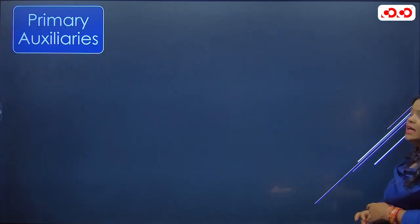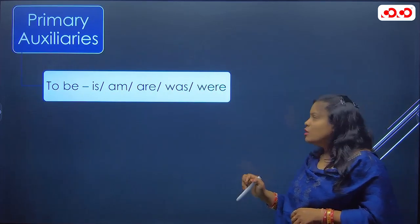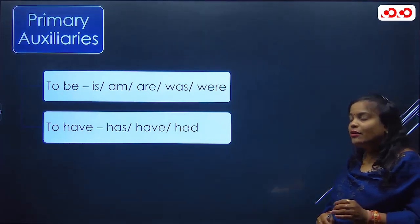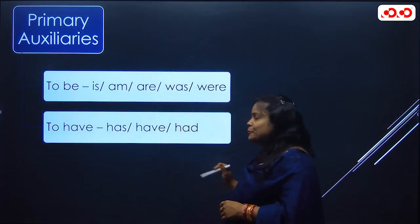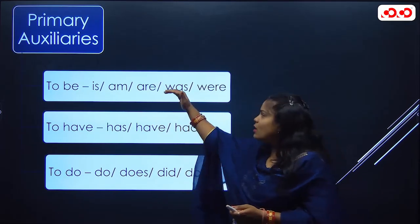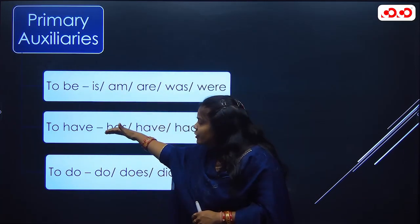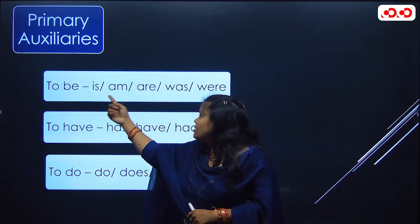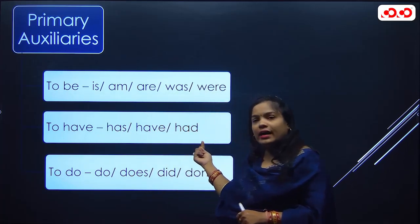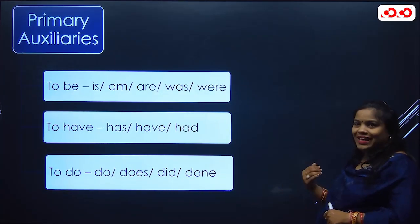Now let's talk about helping verbs. Primary auxiliaries exist in three different forms: the 'to be' form — is, am, are, was, were; the 'to have' form — has, have, had; and the 'to do' form — do, does, did, done. These are all primary auxiliaries. We will see how and where to use each one going forward.